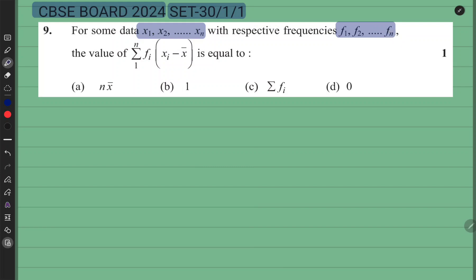fn the value of summation 1 to n fi into xi minus x bar is equal to we need to find the value of this expression. Is expression ki value find karna hai.